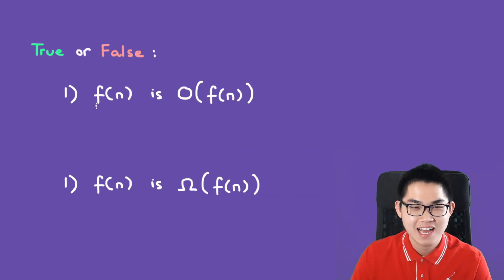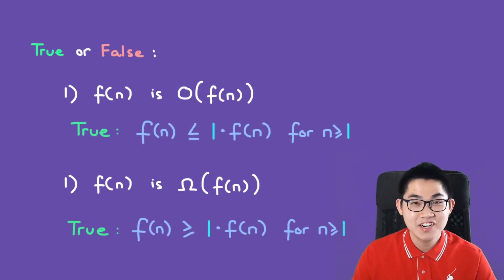True or false? f(n) is big O of f(n), so basically saying it's big O of itself. And the second one is f(n) is big omega of f(n). It turns out that both of these statements are true. So if you use the inequality, you can see that f(n) is less than or equal to 1 times f(n). So you pick c to be 1 and you can pick n₀ to be 1 as well.